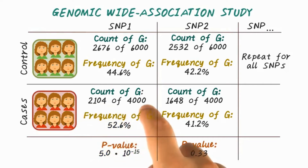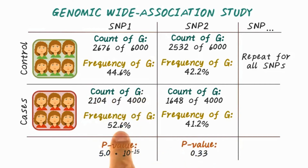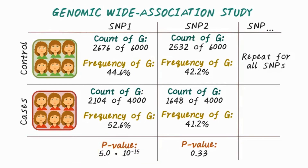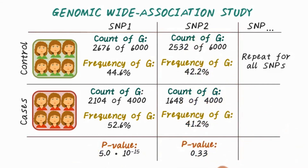In the case group, we have 2,104 out of 4,000 with the corresponding variation G at this location, so the frequency is 52.6%. If we go through the calculation, we find the p-value is 5 times 10 to the minus 15, which means this is extremely significant. We can conduct the same calculation on SNP 2 and find that the p-value here is 0.33, which is not significant.